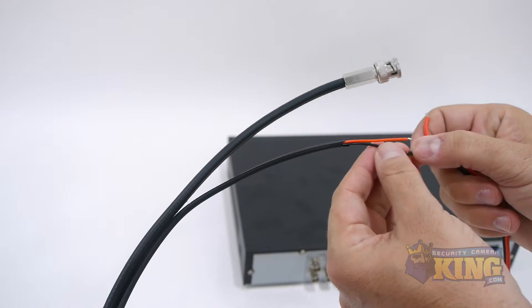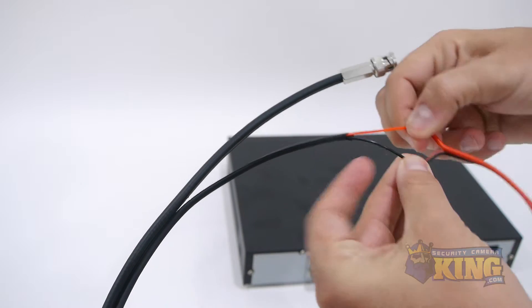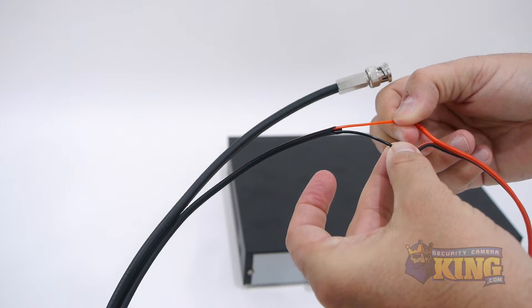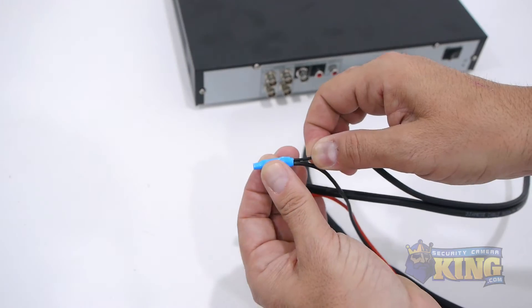At the camera end of the cable, you will attach a PT3 female power lead to plug into the camera. Here, we are using B-wire beanies to connect our wires.